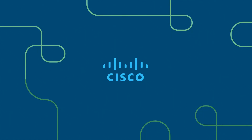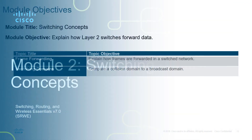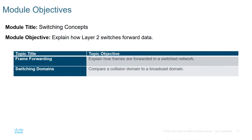Welcome to my Switching, Routing, and Wireless Essentials course — the CCNA version 7 curriculum, and the second of three courses. Module 2, Switching Concepts, focuses predominantly on switching concepts such as how switches actually make forwarding decisions. We're looking at two main things: frame forwarding and switching domains, which will be a combination of collision and broadcast domains.